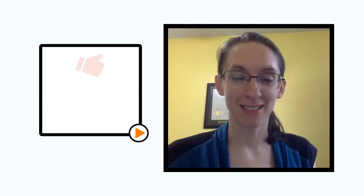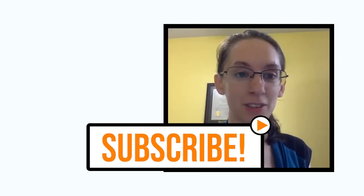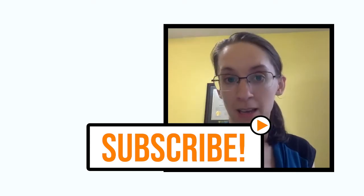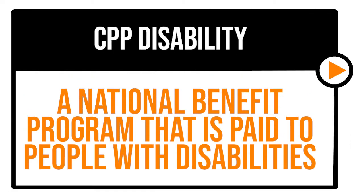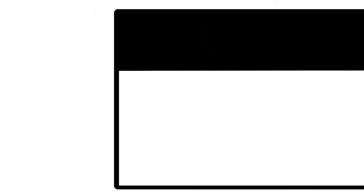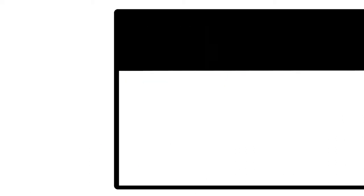Can you get CPP disability and ODSP at the same time? So these are two different disability benefits that are available. The CPP disability is a national program to pay benefits to people with disabilities. ODSP is the Ontario Disability Support Program. So this is only available in Ontario and it's a provincial program that also provides financial support to people with disabilities.